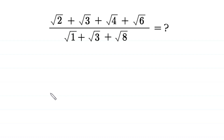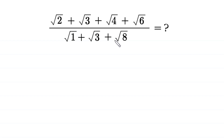Hello, welcome to how to solve this very nice square root math simplification problem. We are given the square root of 2 plus square root of 3 plus square root of 4 plus square root of 6, divided by square root of 1 plus square root of 3 plus square root of 8. First of all, we suppose that this expression is equal to x.